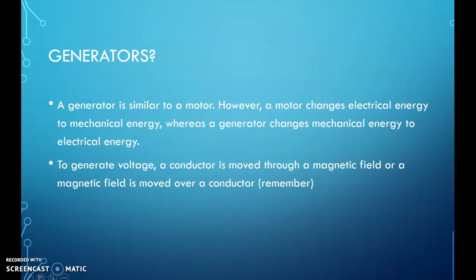Just to remember that to generate voltage, a conductor's moved through a magnetic field, or a magnetic field is moved over a conductor, or it could be alternating current next to a conductor, because that alternating current creates a magnetic field that changes polarity.